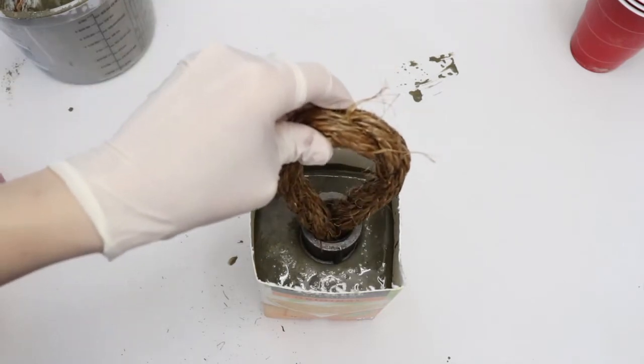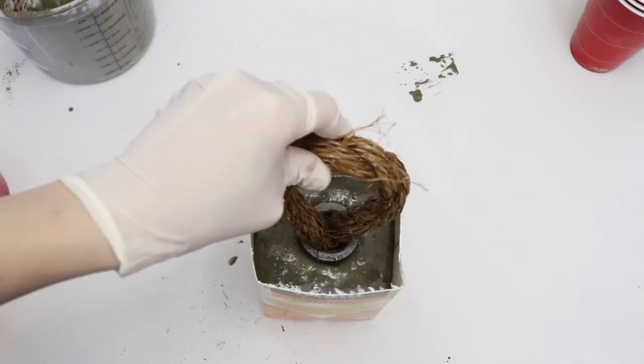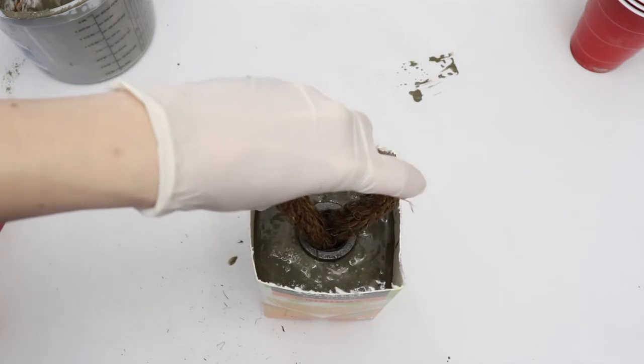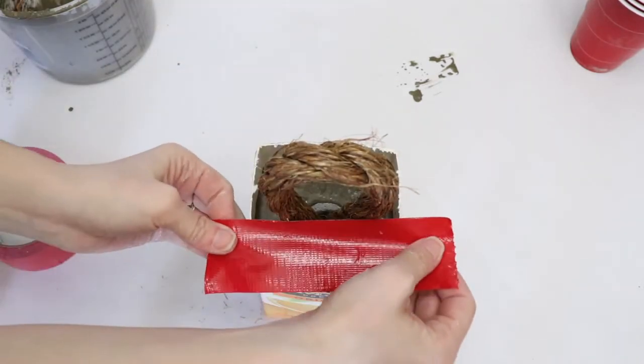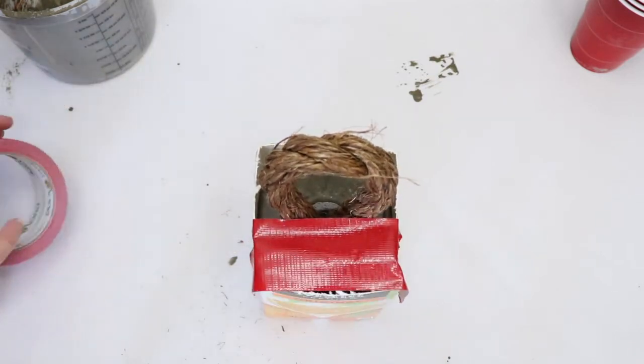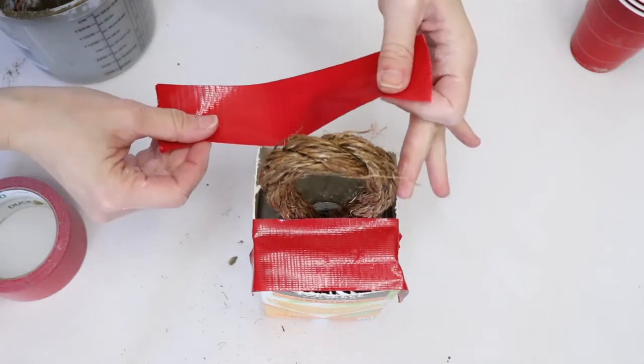Now you're going to push the coupling down into the concrete to the exact point you want it. You could leave a little of the metal sticking out or push it all the way down. Once the rope is where you want it, use some duct tape to hold everything in place so that the rope and coupling don't sink any further.